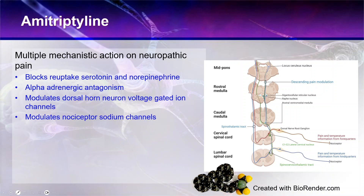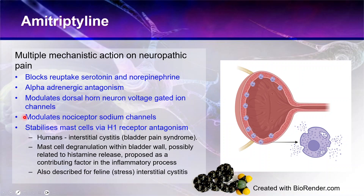Another interesting action of amitriptyline is that it stabilizes mast cells via action on the H1 receptor, antagonizing it. That's why it's useful for interstitial cystitis or bladder pain syndrome in humans and the equivalent condition in cats. The degranulating mast cell is considered a very important contributory factor in bladder pain syndrome or stress cystitis, so amitriptyline is often the first-line agent for this type of disorder.